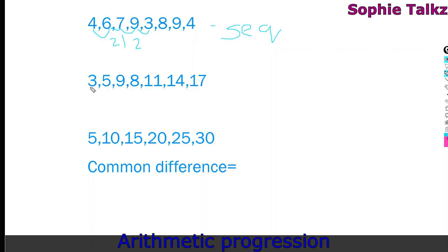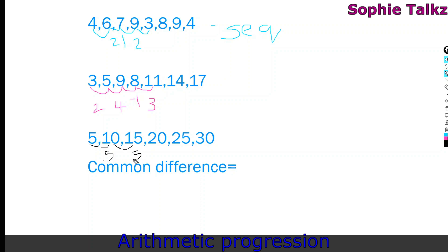For the sequence 3, 5, 9: the difference between 3 and 5 is 2, and between 5 and 9 is 4 — differences are not equal, so it is not an AP. However, for 5, 10, 15, 20: the difference between each consecutive pair is 5, so the common difference is 5 — this is an Arithmetic Progression.